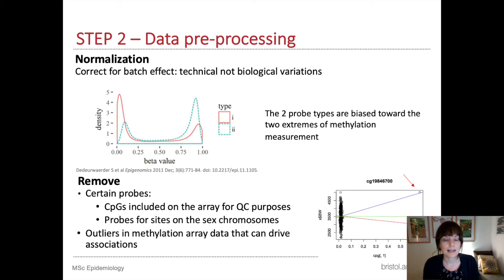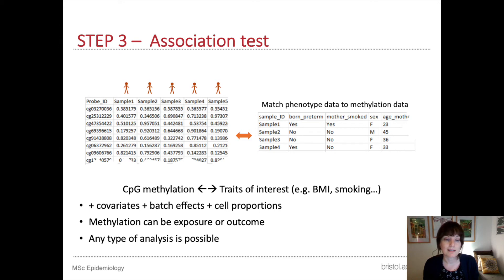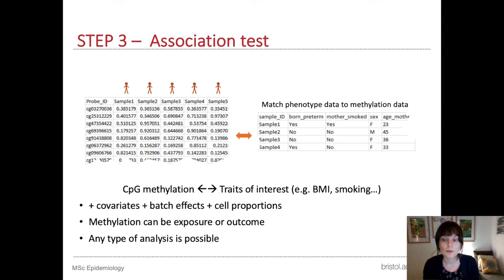Once we're happy with our DNA methylation data, we can run an association test. This involves comparing DNA methylation beta values to a phenotype or a trait of interest, usually with adjustment for other covariates. As an example, we might run an EWAS of smoking where we run a linear regression model for each CPG on the array, treating methylation as the outcome and smoking as the exposure with adjustment for sex and age. Other things we commonly adjust for in EWAS are technical batch effects and the cellular makeup of our samples. We can actually estimate the cellular makeup from DNA methylation itself, using the methylation data to estimate cell proportions and then including those estimated cell proportions in our EWAS model.